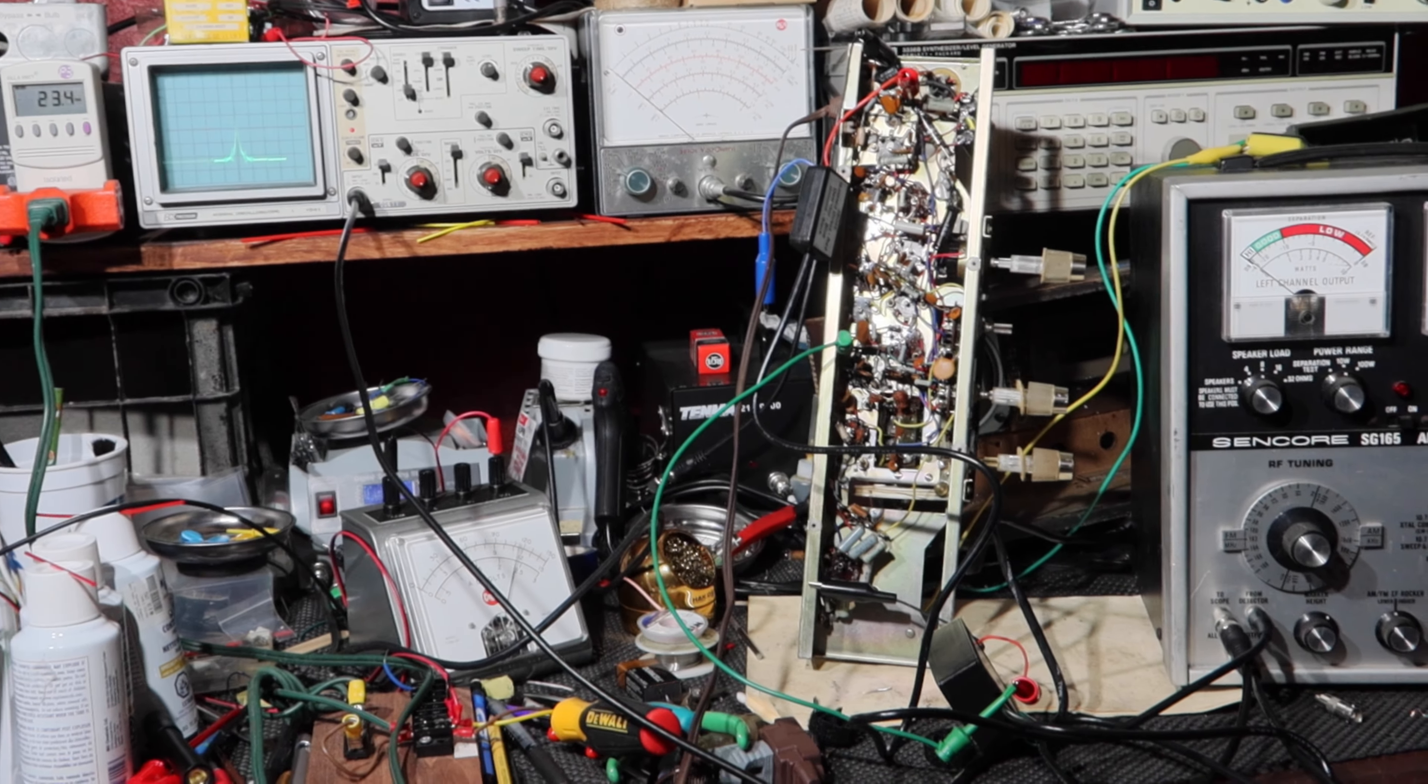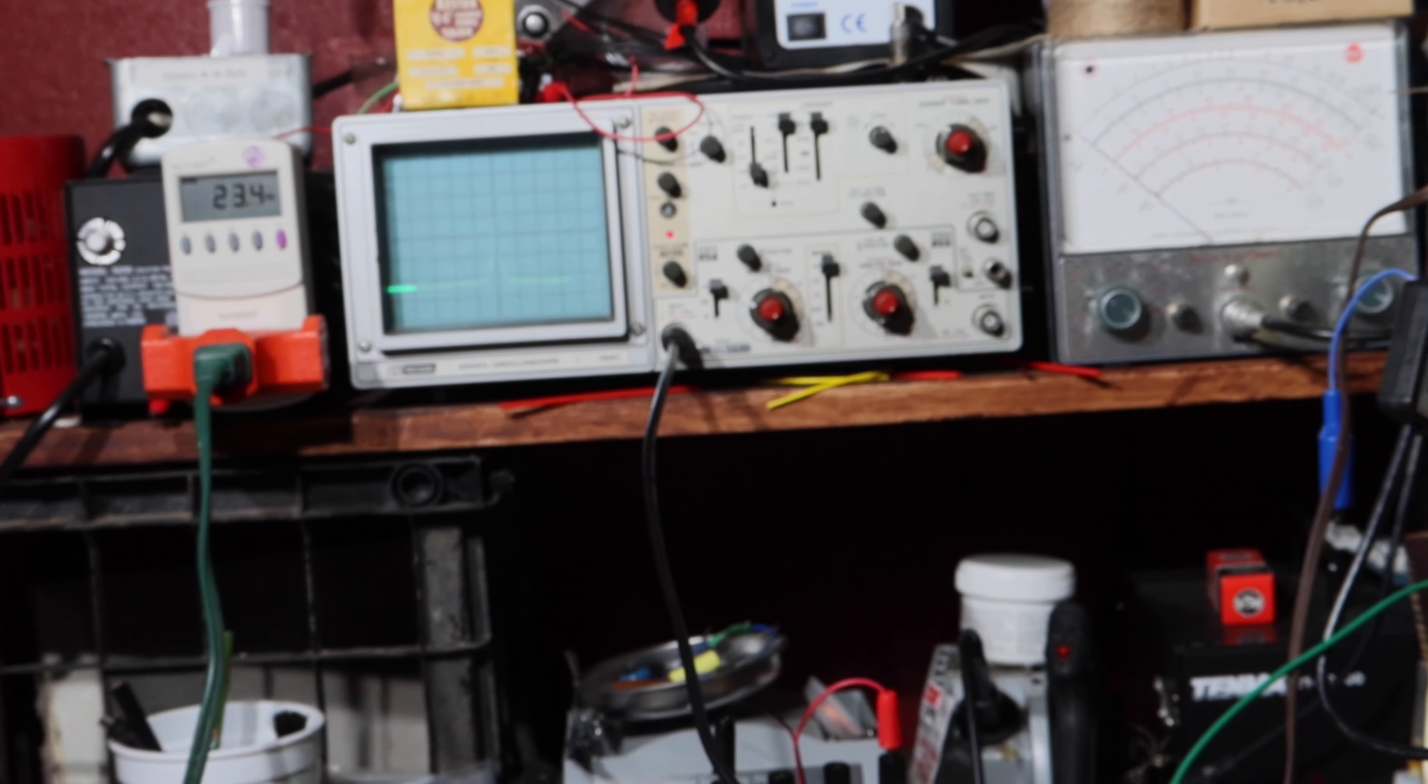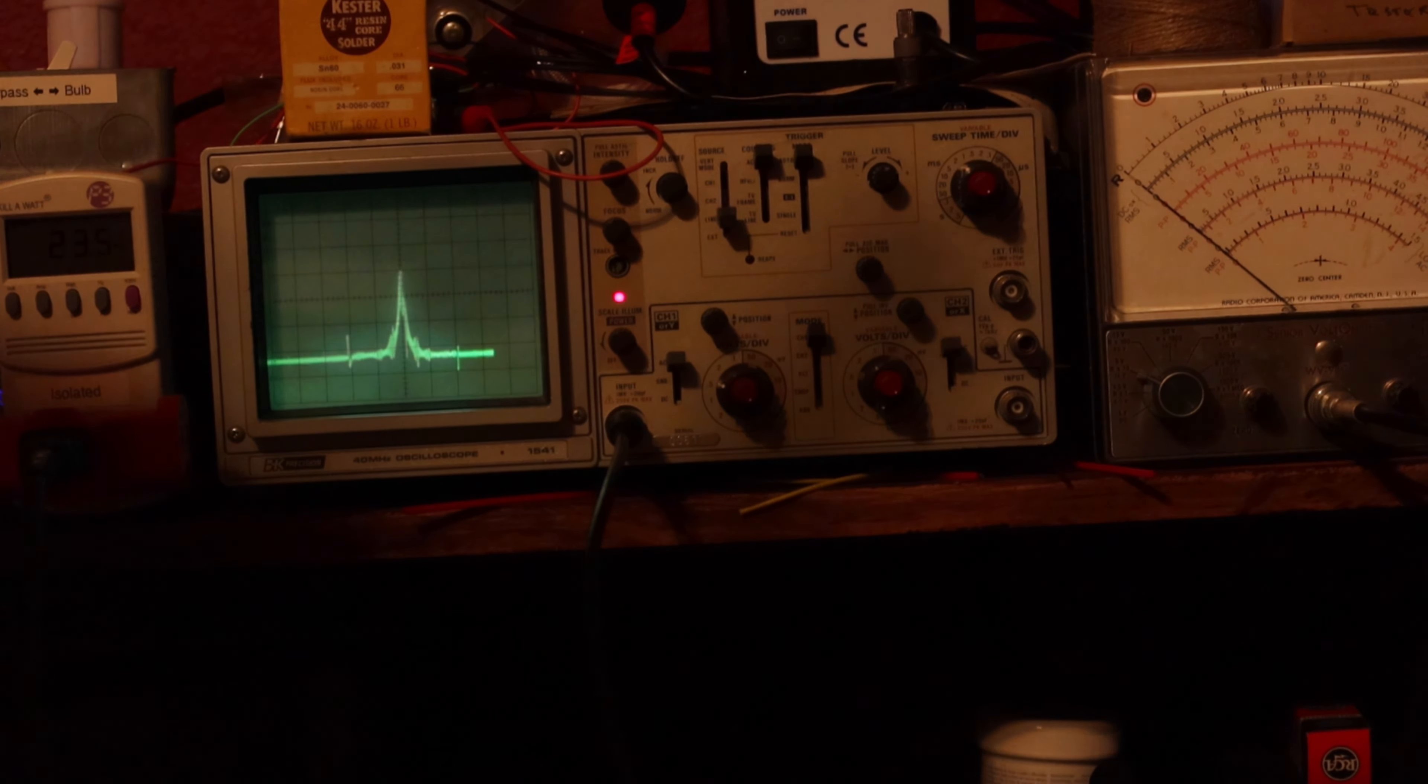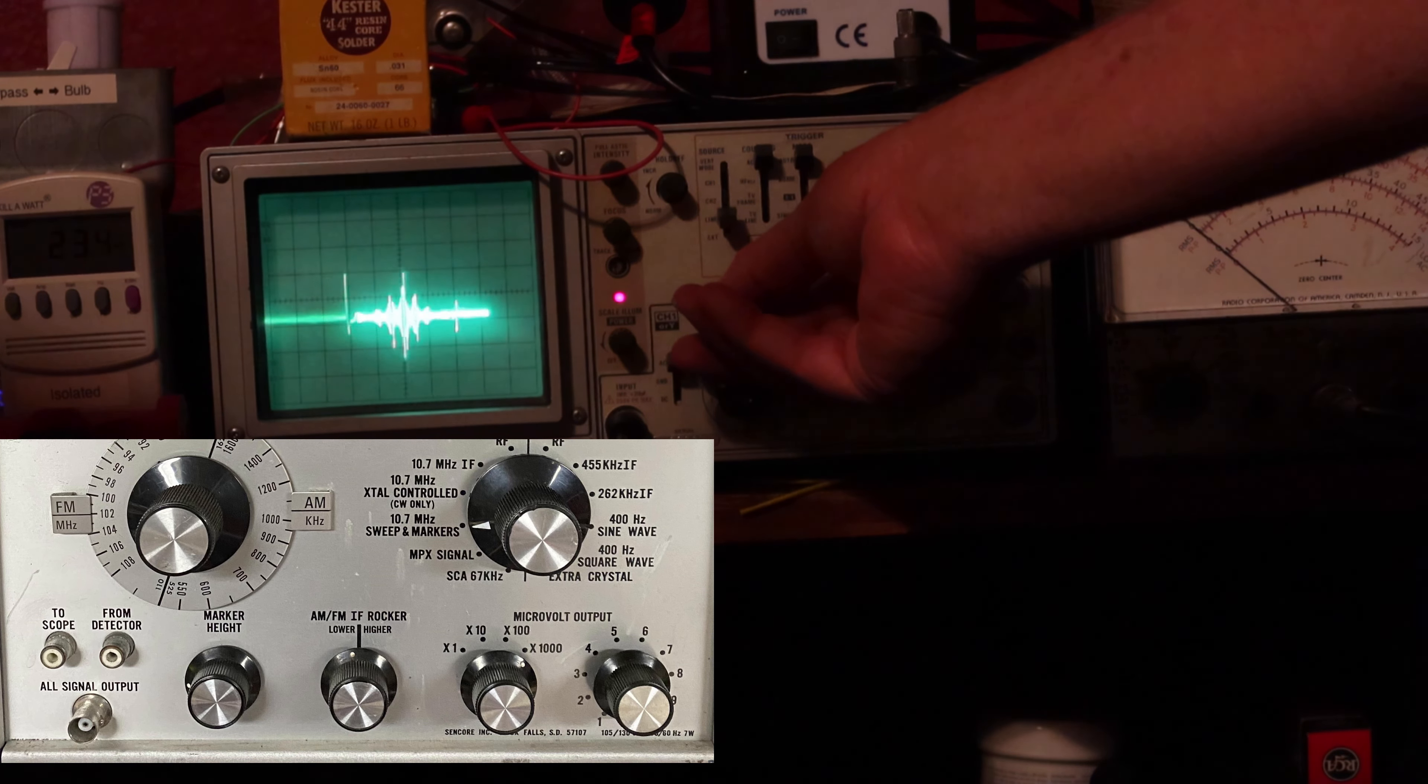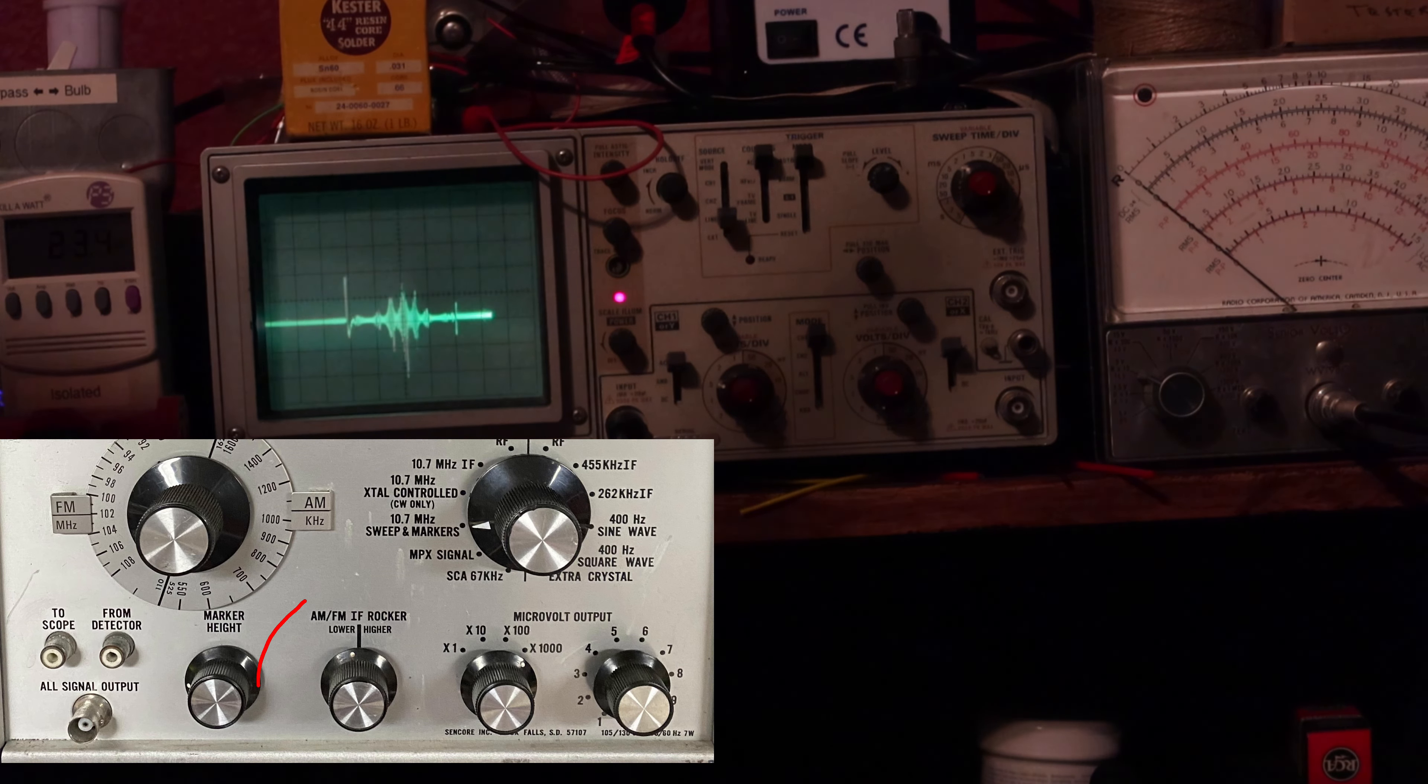So what's happening is this is producing the sweep signal. It comes out of the all outputs, goes into the matching pad, goes into the mixer. The detector probe picks that up and then brings it into the from detector port on the SG-165. It then puts a post marker on it and then sends that signal to the oscilloscope that can go into input 1 or input A, channel 1, into the oscilloscope. So what we have is we have a sweep signal going through the IF FM section. So we need to see if I can zoom in and we can see what we have there.